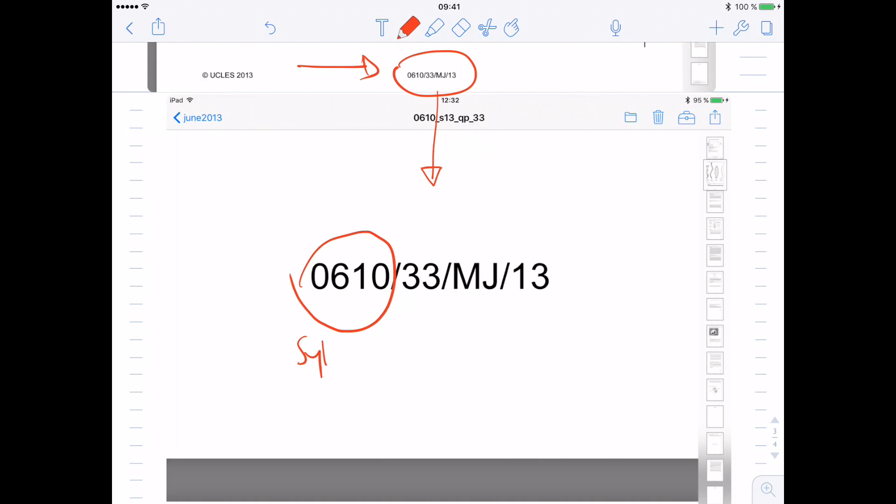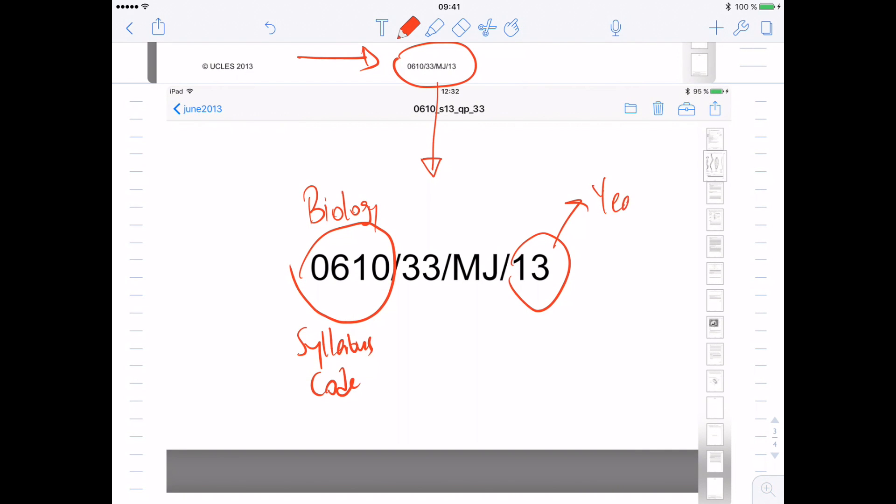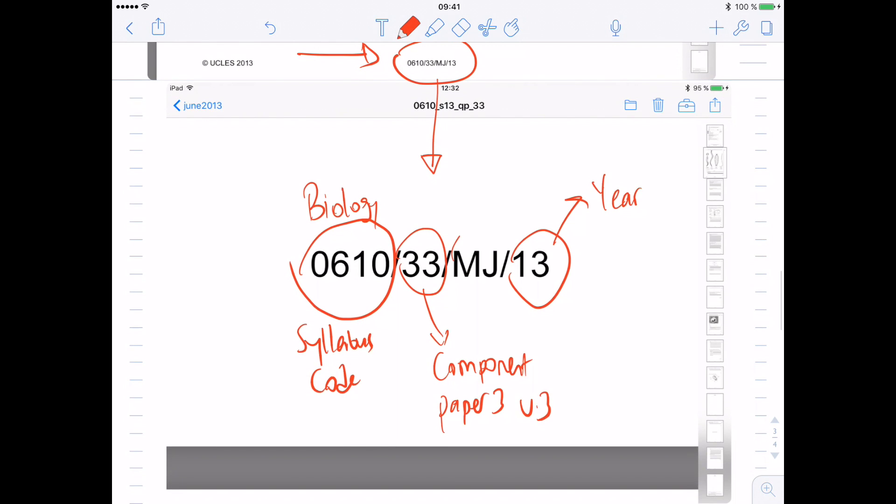Let's decode this code. This number is a syllabus code, which is biology. 0610 is biology. But the code for the component and for the year has just swapped. So the one in the end is the year. So year 2013. And this is paper 3, the component paper. Which is paper 3, version 3. And MJ.